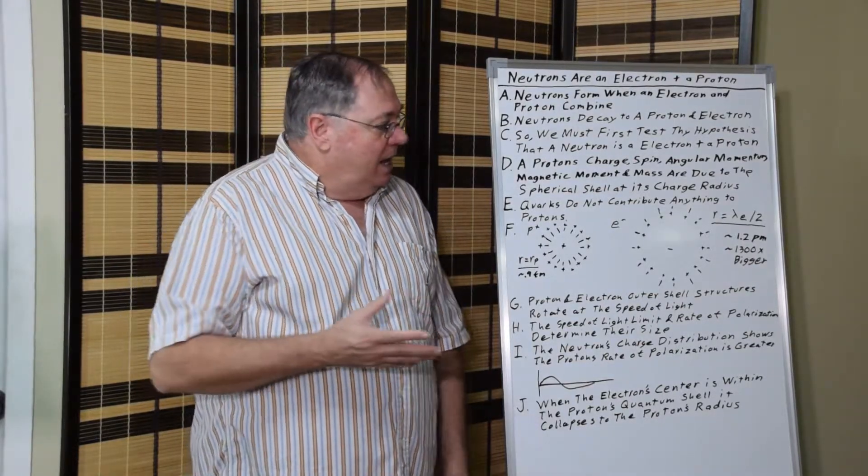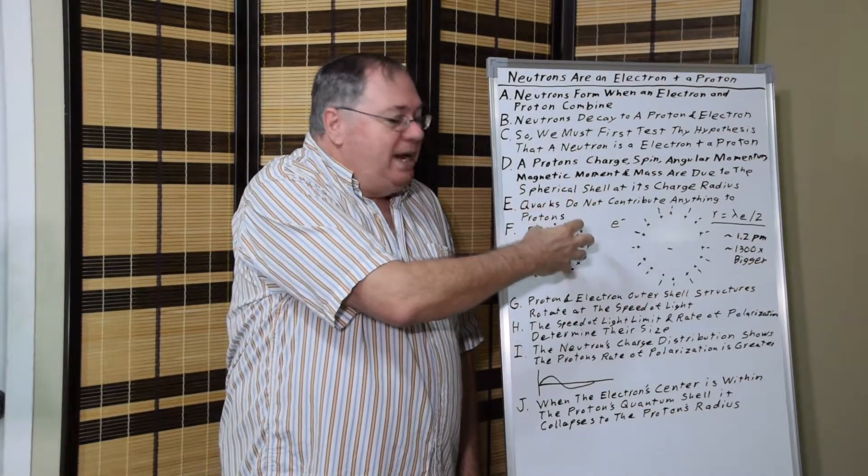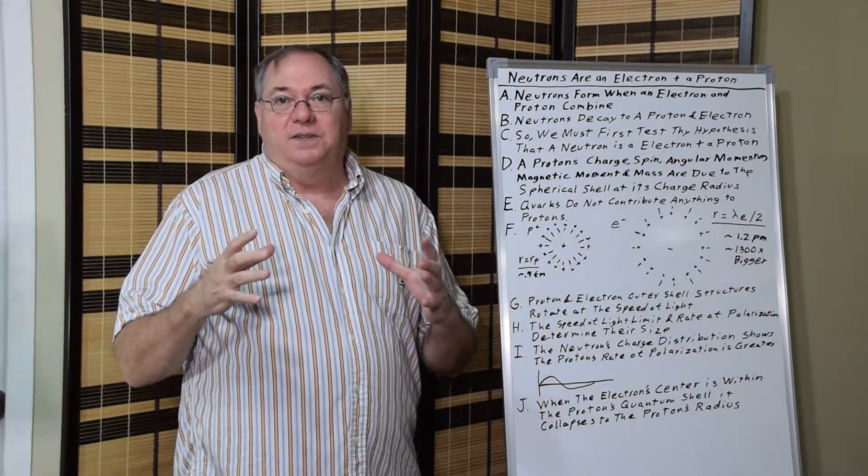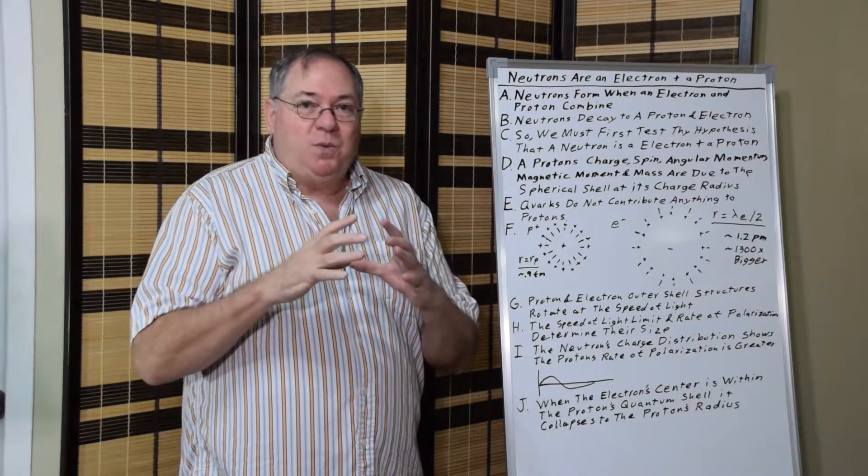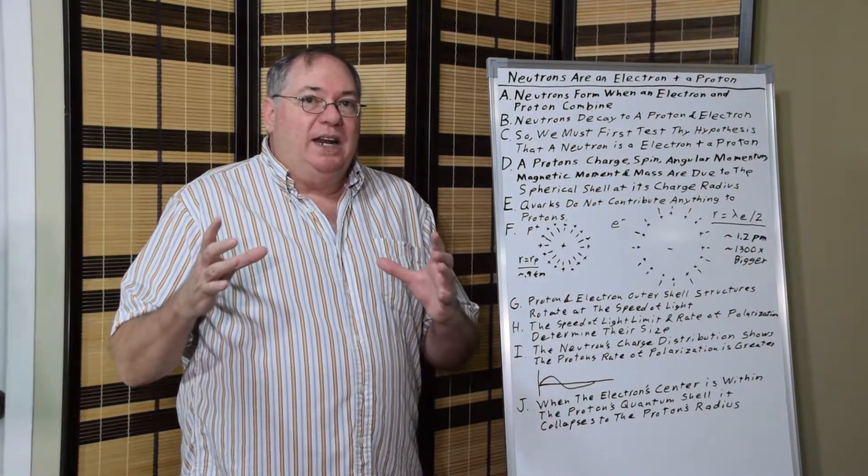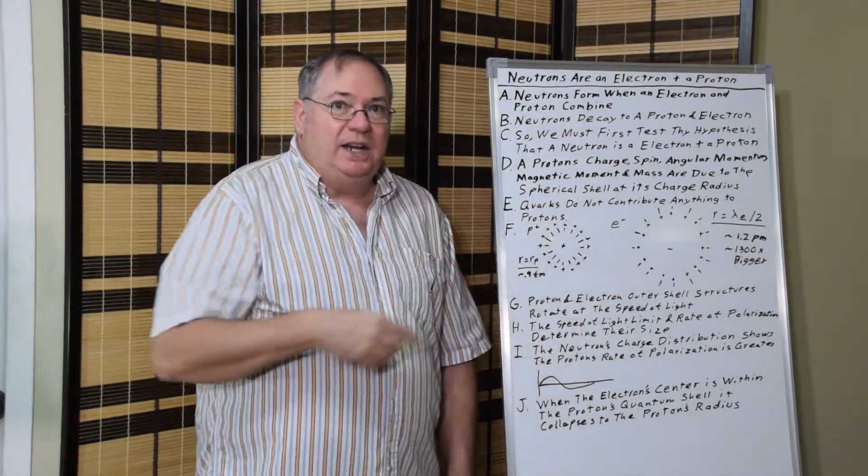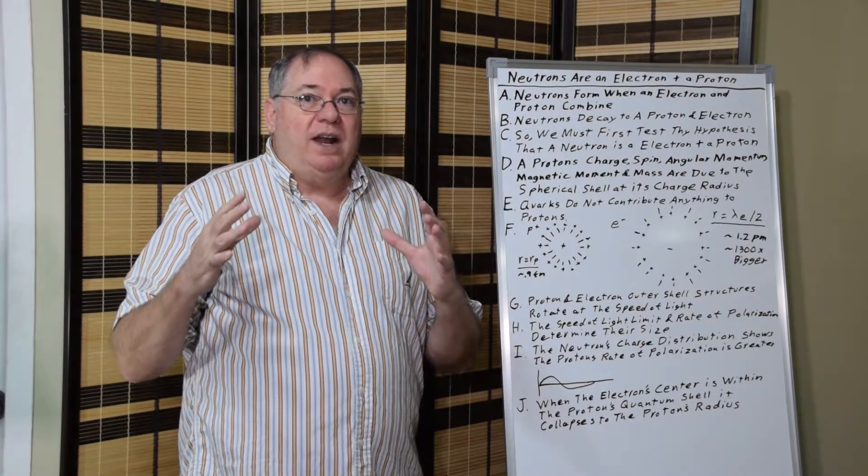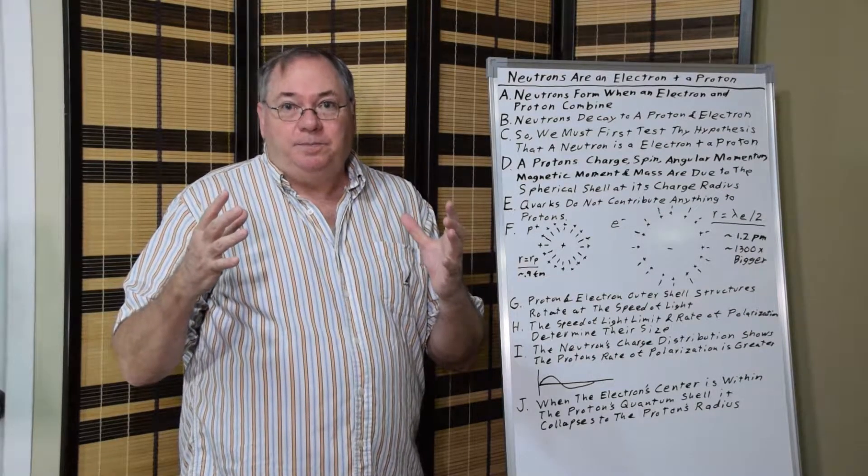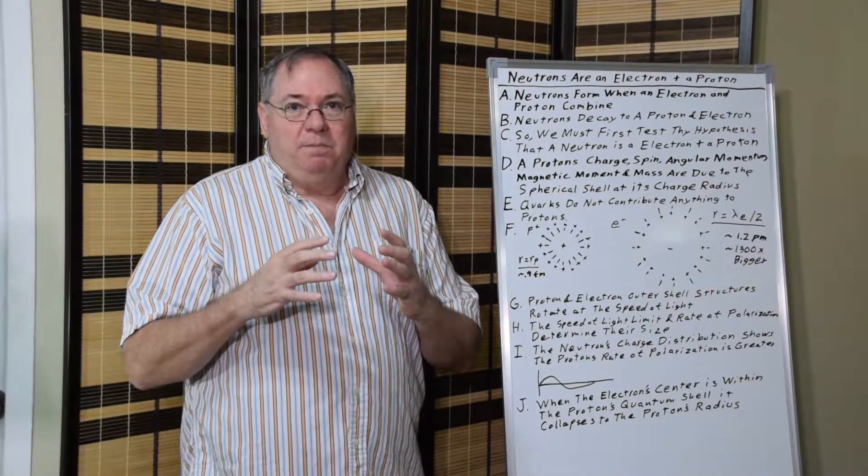But what happens, because both of these are spinning at the speed of light at their boundary, the speed of light limit is what sets the size of the structure. It can't get bigger because of the speed of light limit. So that's why it's the size it is for the rotation it has. So once an electron's center is centered inside the proton's shell, then the electron can no longer maintain its Compton-sized shell. It has to collapse, and it has to collapse down to the radius of the proton because of the speed of light limit.